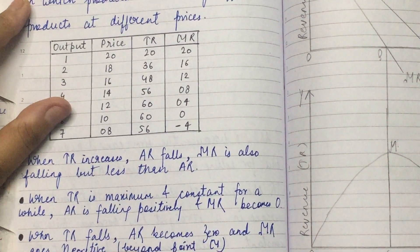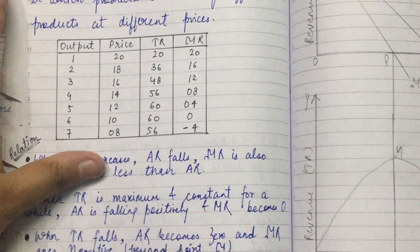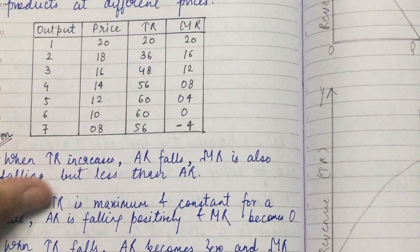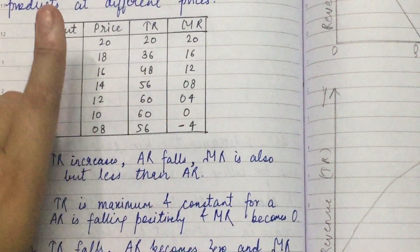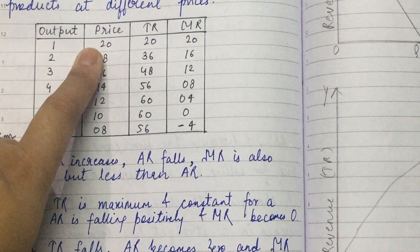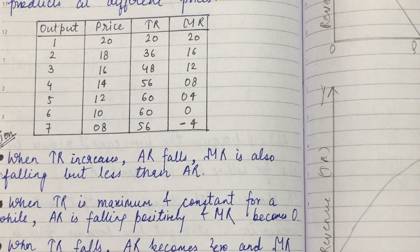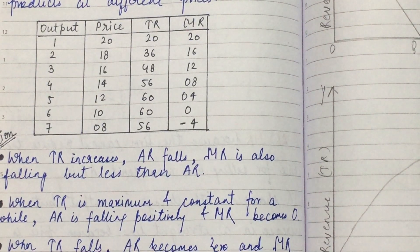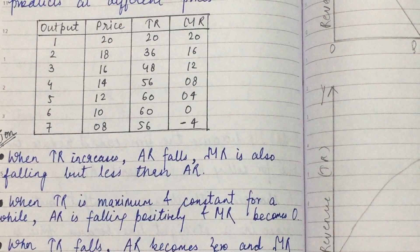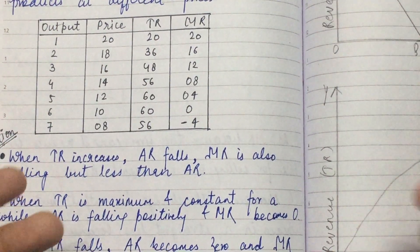You can explain the meaning here, and then we will make a table. When we make a table, our output is 1, 2, 3, 4, 5, 6, 7. Price is falling because we know that in an imperfect market there is always a price difference, because producers buy different types of goods, so the prices are always different.